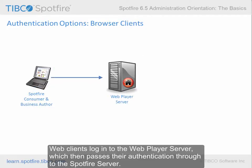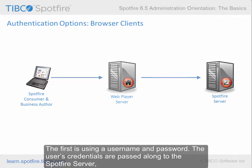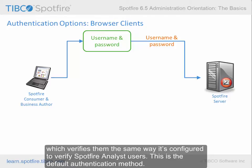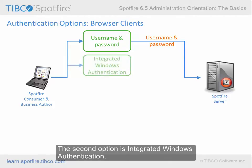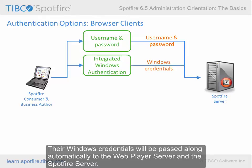Web clients log into the Web Player server, which then passes their authentication through to the Spotfire server. Here are the four basic options for authentication. The first is using a username and password — the user's credentials are passed along to the Spotfire server, which verifies them the same way it's configured to verify Spotfire Analyst users. This is the default authentication method. The second option is integrated Windows authentication, where users who have logged in to the appropriate Windows domain will not be prompted for a username and password — their Windows credentials will be passed along automatically to the Web Player server and the Spotfire server.